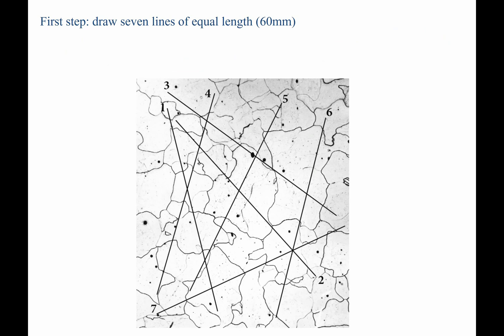Here we see that there are 7 lines now drawn in the sample. If you're using the image at the exact size that it's printed in the book, then the length of each of these lines, if you were to measure them, would be 60 millimeters. As it's drawn on my computer screen, it's actually larger — when I measure it, I'm getting 105 millimeters. We'll talk about what to do with this discrepancy in a moment.